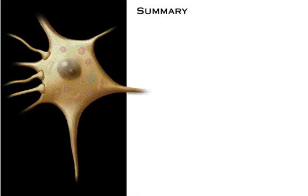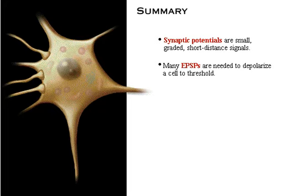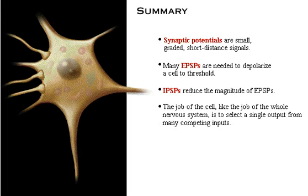Here's a summary of what we've covered. Synaptic potentials are small, graded, short-distance signals. Many excitatory post-synaptic potentials are needed to depolarize a cell to threshold. Inhibitory post-synaptic potentials reduce the magnitude of excitatory post-synaptic potentials. The job of the cell, like the job of the whole nervous system, is to select a single output from many competing inputs.